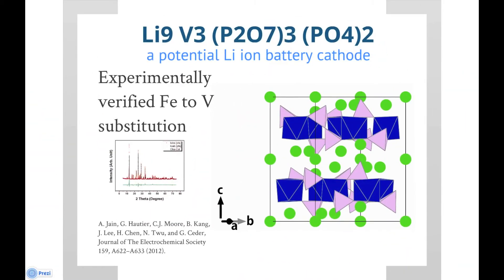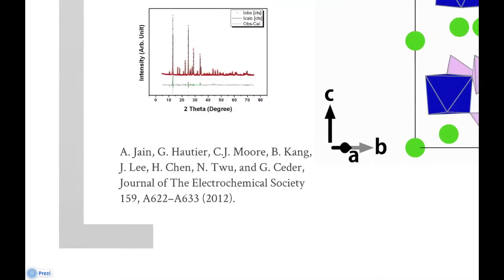The first example is a lithium-vanadium phosphate that's interesting for use as cathodes in lithium-ion batteries. This composition was not reported in the ICSD, however it was predicted by the Structure Predictor app because there exists a similar material but with iron in the vanadium site. We were able to make this material through conventional solid-state synthesis. If you'd like to know more, we encourage you to look at our paper in the Journal of the Electrochemical Society.